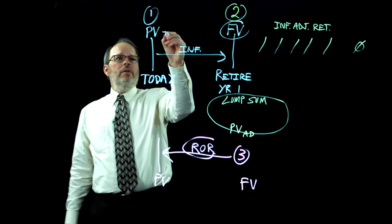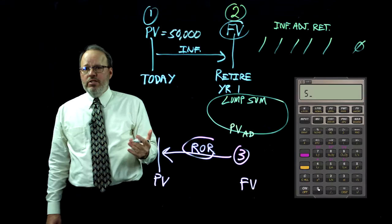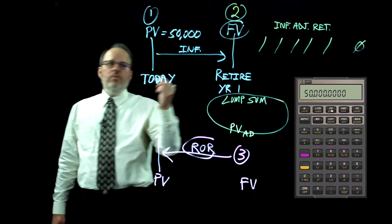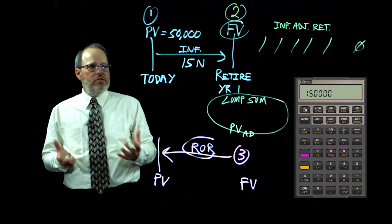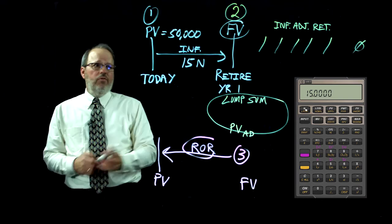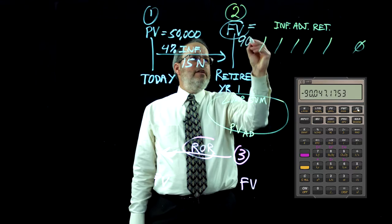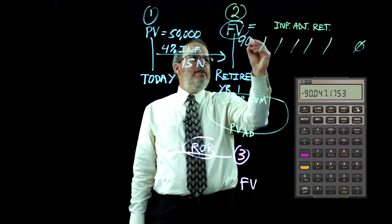Let's go through the three-step process. For step one, she wants $50,000 a year — that's our present value — and she wants to retire in 15 years, so 15 is our number of compounding periods. We use the inflation rate of 4% as our interest rate per year to maintain buying power. Using a 4% inflation rate, present value of $50,000 over 15 years, we solve for future value and should get $90,047. We'll round to the nearest dollar.